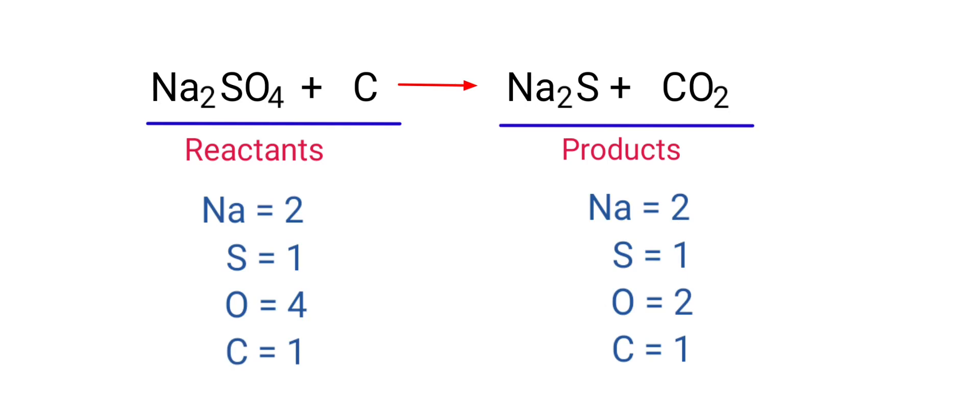If you look at this equation, the equation is not balanced. In the reactants side, there are 2 sodium atoms, 1 sulfur atom, 4 oxygen atoms and 1 carbon atom present. And the products side, there are 2 sodium atoms, 1 sulfur atom, 2 oxygen atoms and 1 carbon atom present.